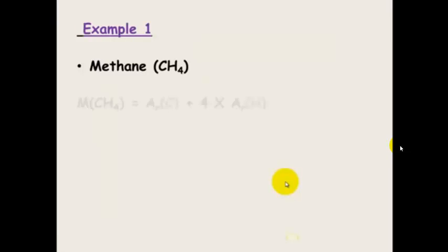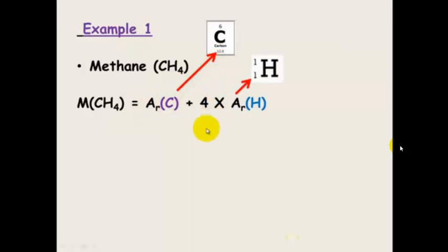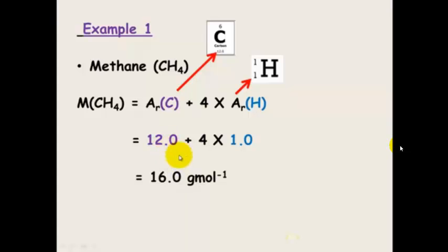Let's have a look at methane. The molar mass of methane equals the relative atomic mass of carbon, because there's one carbon, plus the relative atomic mass of hydrogen times four, because there's four hydrogens. Where do I get these numbers from? From the mass numbers on the periodic table. So 1 × 12 plus 4 × 1. You've always got to do your multiplication first. That equals 12 plus 4, which is 16. Remember your units are essential: grams per mole.